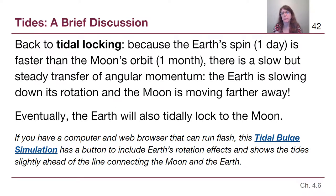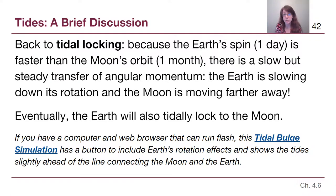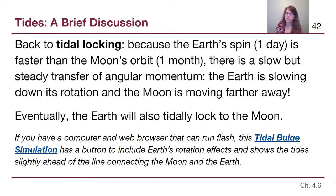Back to tidal locking: because the Earth spins faster than the Moon orbits, there is a small transfer of angular momentum. This means the Earth is slowing down a tiny fraction of a second every year and the Moon is moving farther away a small fraction of a meter every year. Eventually the long-term effect would be that the Earth is also tidally locked to the Moon, so instead of a 24-hour day and a 30-day month, we'd end up with a single value representing both. It's a really cool idea, though beyond our curriculum — bring questions to the discussion boards.